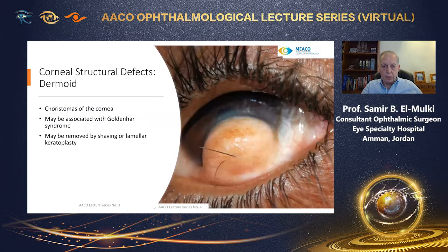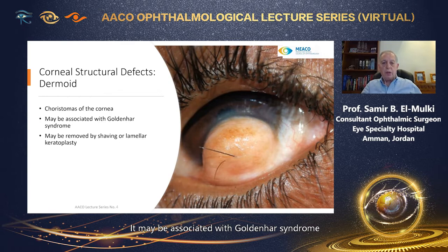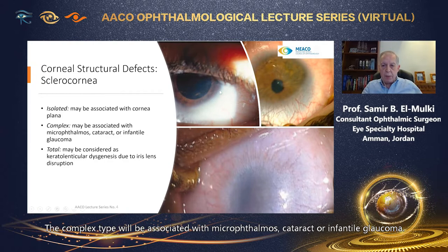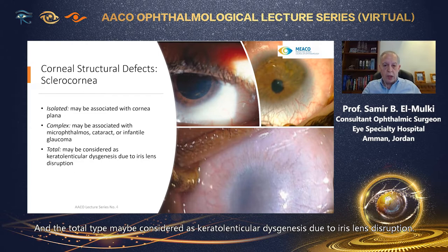Dermoid is a choristoma of the cornea. It may be associated with Goldenhar syndrome and may be removed by shaving or lamellar keratoplasty. Sclerocornea may be isolated, complex, or total. The isolated type may be associated with cornea plana. The complex type may be associated with microphthalmos, cataract, or infantile glaucoma. The total type may be considered as keratolenticular dysgenesis due to iris-lens disruption.